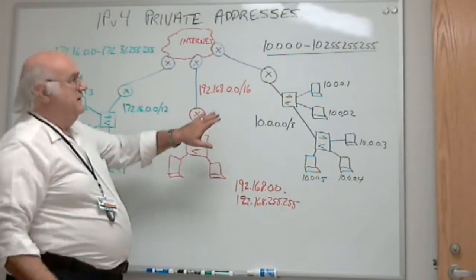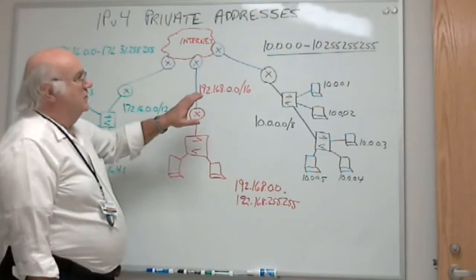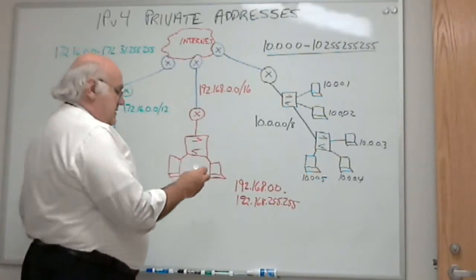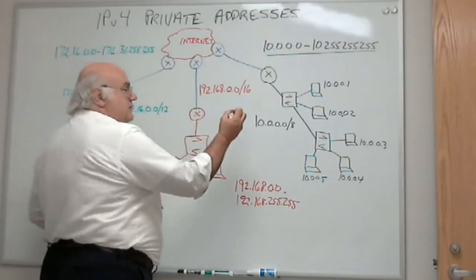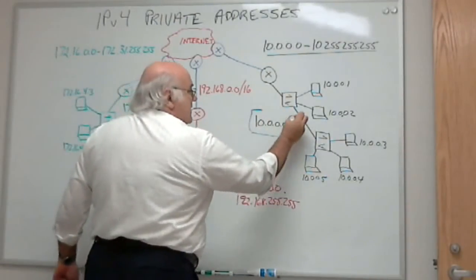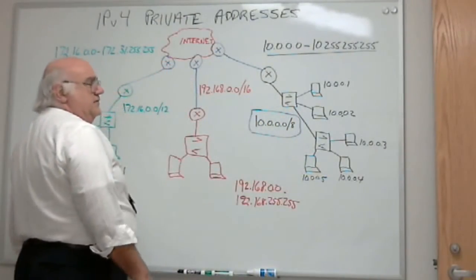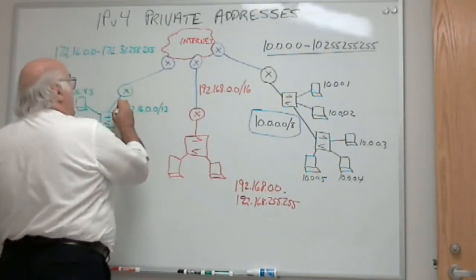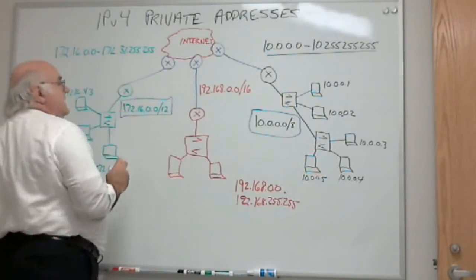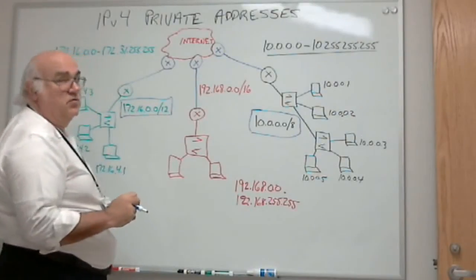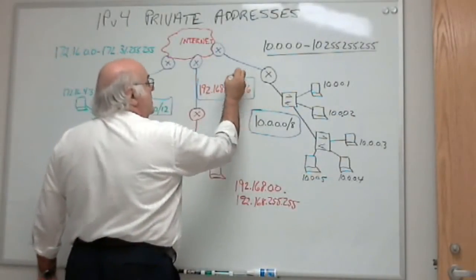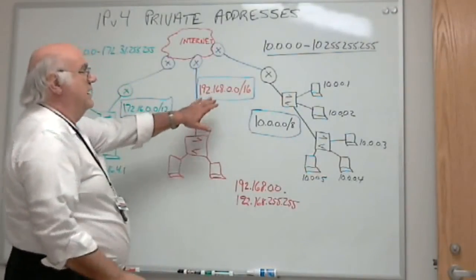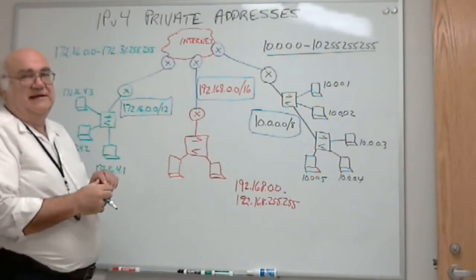That's saying the same thing as 192.168.0.0 slash 16. I'm using a prefix of 16 here. So these are my three private address blocks that I can use. These you need to memorize. 10.0.0.0 slash 8, 172.16.0.0 slash 12, and 192.168.0.0 slash 16.